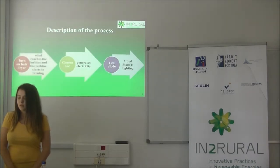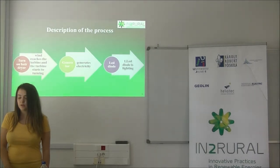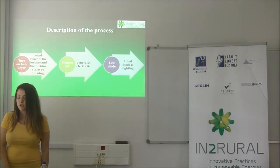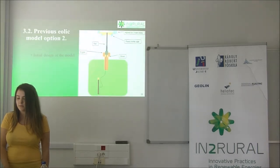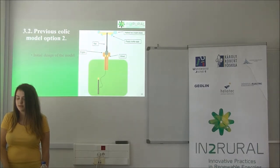The hydraulic model description of the process: the first step uses a thermal hair dryer. When wind reaches the turbine, the turbine starts to turn, the generator generates electricity, and the LED diode lights up. The second previous hydraulic model is made from a pan, engine, wood, LED diode, half ice cream sticks, plastic bottles, and so on.